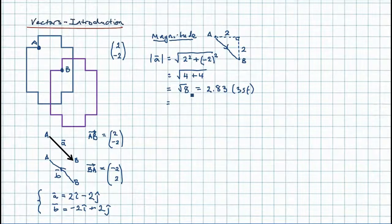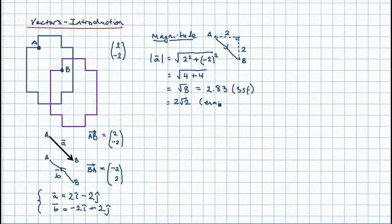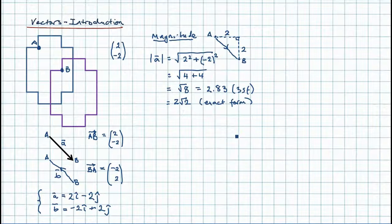To keep the answer in exact or surd form, we look for a square factor under the root sign. √8 = √(4 × 2) = 2√2. So the exact answer is 2√2, which is the preferred form rather than the decimal approximation. That completes the magnitude of our vector.